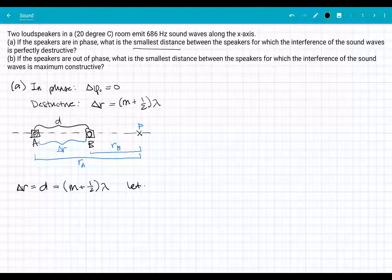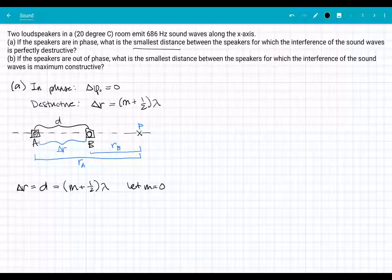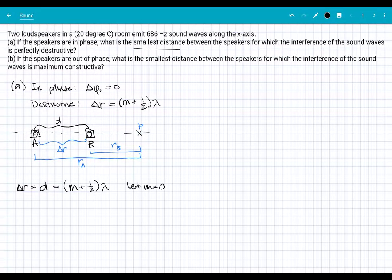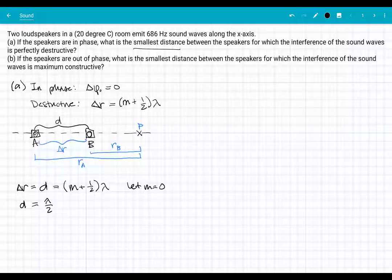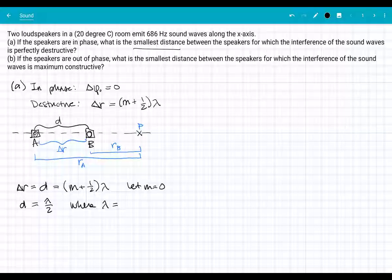That will be equal to M plus one half times lambda. They're asking for the smallest distance, so we let M equal to zero here. This will happen at multiple places, but they want to know what the smallest distance is. So if M equals zero, then I have D equals lambda over two.